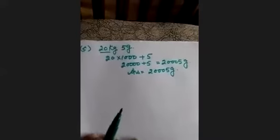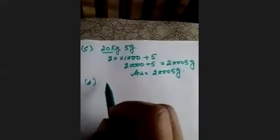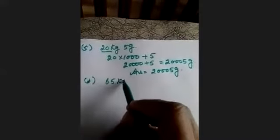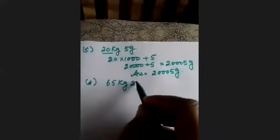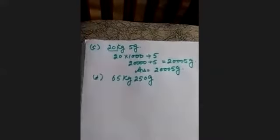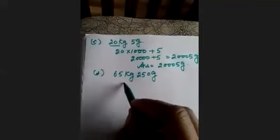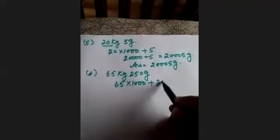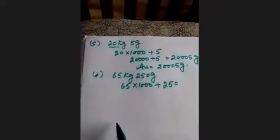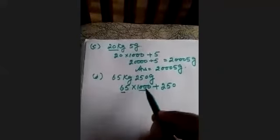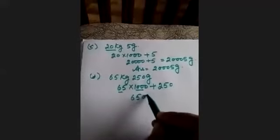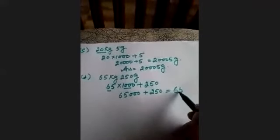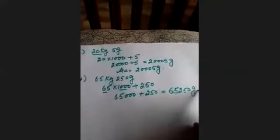Next is Part D: 65 kg and 250 grams. 65 × 1000 + 250 = 65,000 + 250 = 65,250 grams.